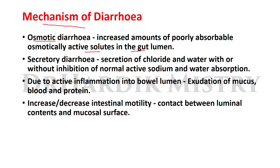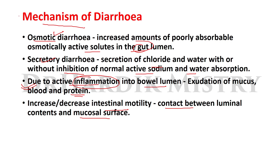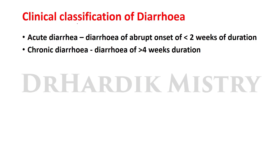The mechanisms of diarrhea include: first, osmotic diarrhea — an increased amount of poorly absorbable, osmotically active solutes in the gut lumen; second, secretory diarrhea — secretion of chloride and water with or without inhibition of normal sodium and water reabsorption; third, exudative diarrhea — active inflammation causing exudation of mucus, blood, and proteins into the bowel lumen; and fourth, altered intestinal motility — increased or decreased motility changes contact between luminal contents and the mucosal surface.